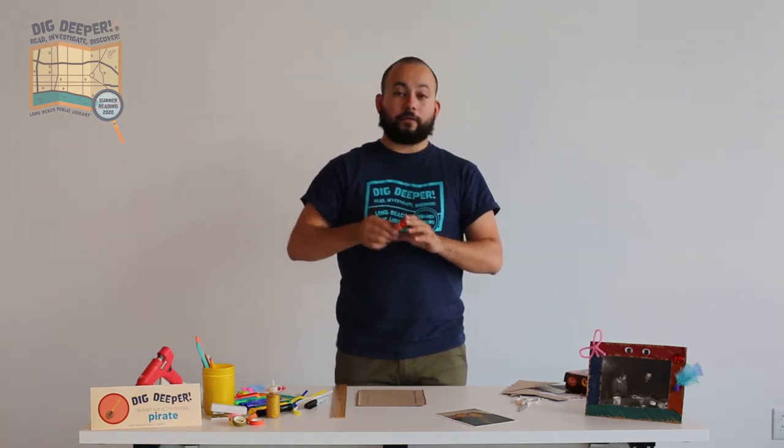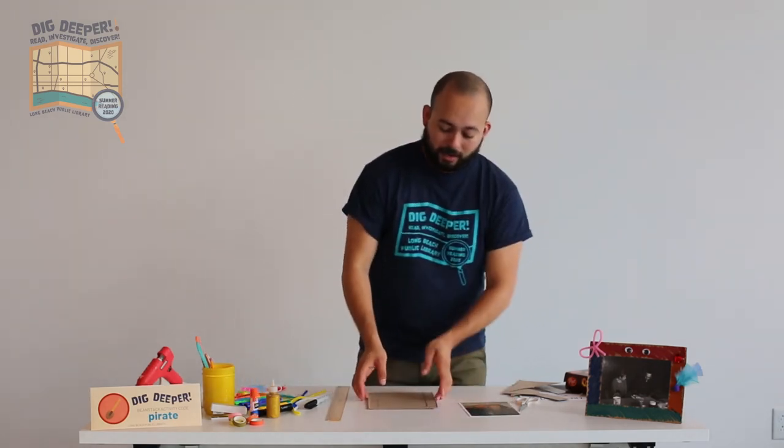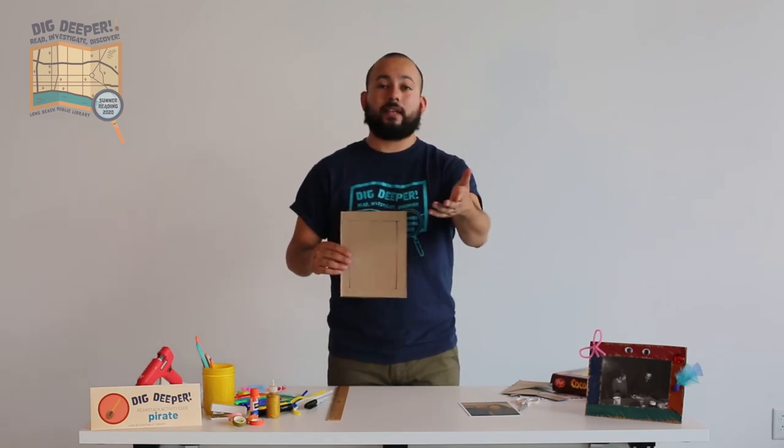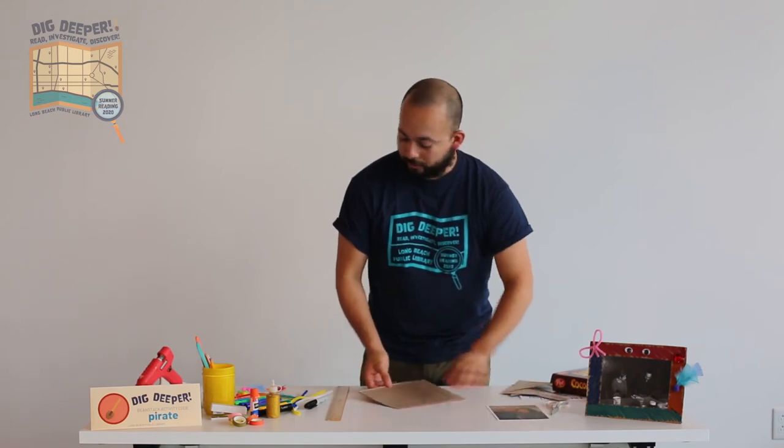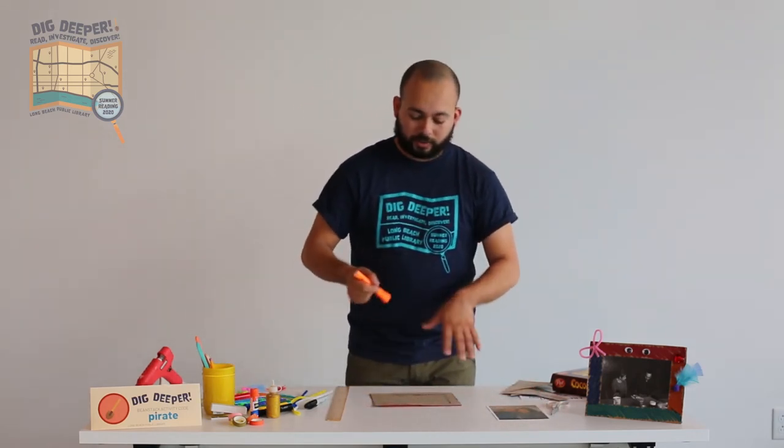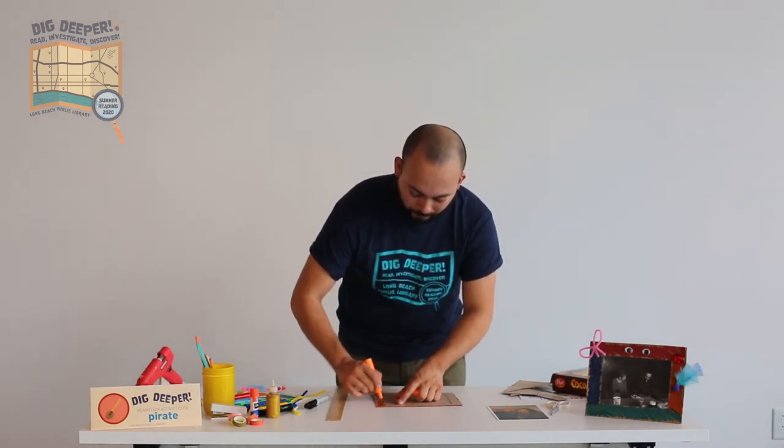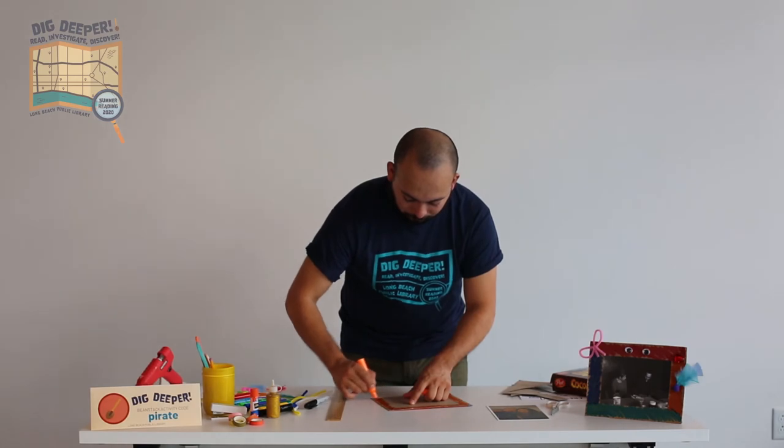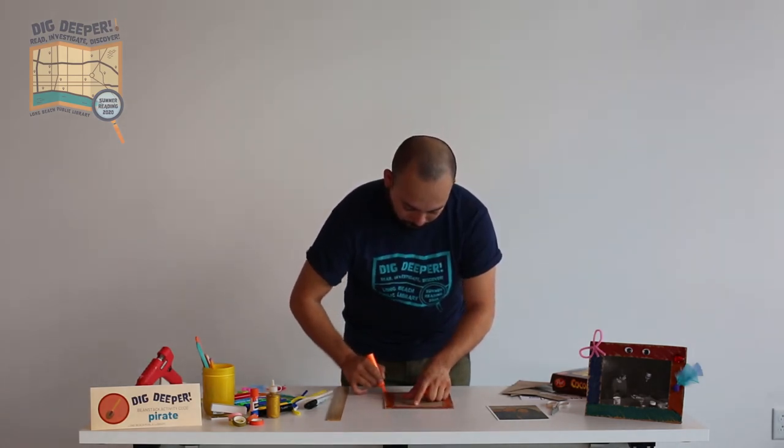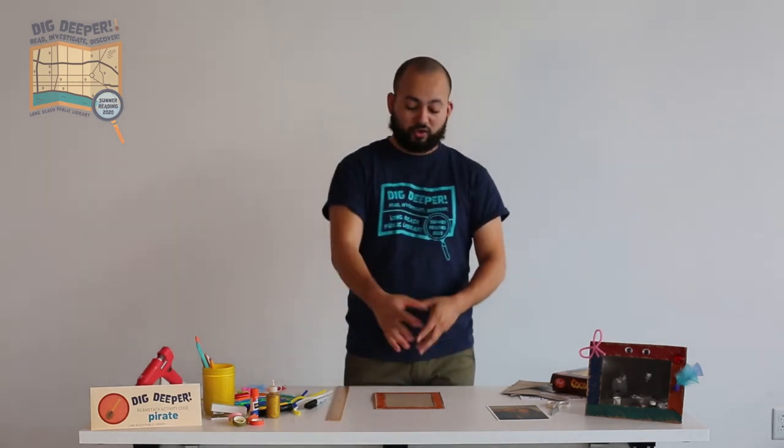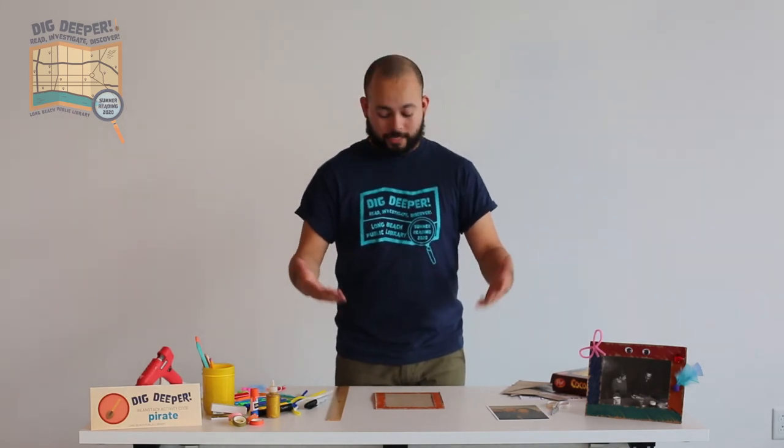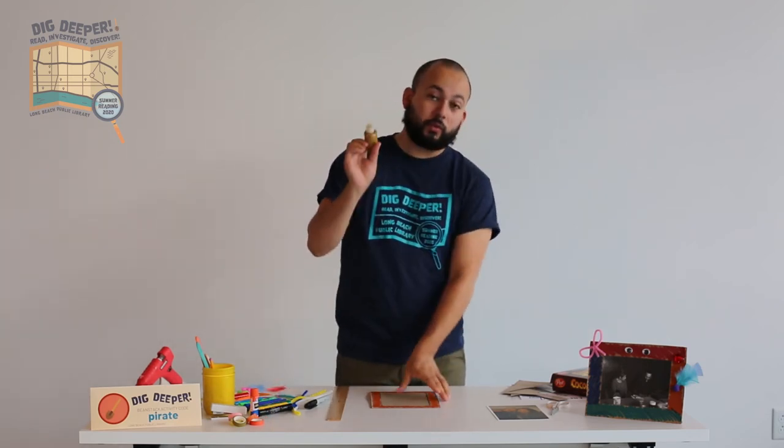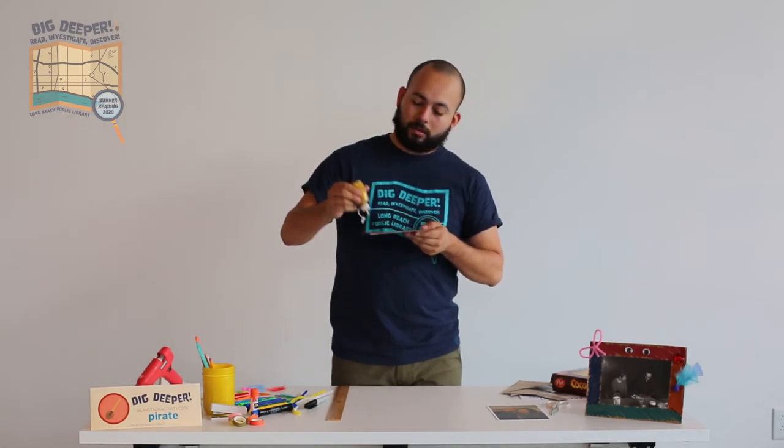So now you're pretty much done with the frame construction part of this. And now what's left is to turn this found object that we cut up a little bit and with other found objects decorate it to make it into a piece of art for yourself and your family. So what I'm going to do here is I'm going to take some of these markers. I think I'll do orange and I'm just going to color the frame. You can choose whatever color you'd like. You can do more than one color. You can draw designs on it. It's your art. You can do whatever you'd like, right?